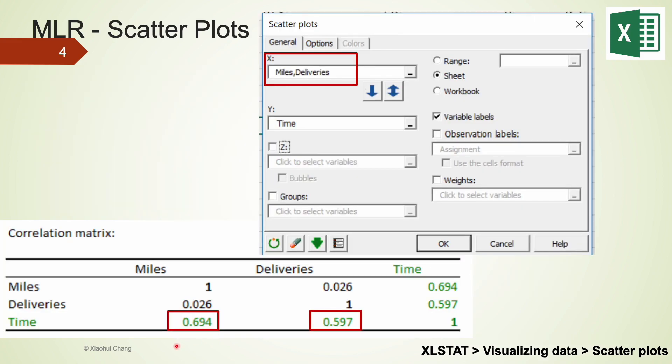We can also examine whether the relationship is linear by using software. For example, in XLSTAT, we can click on Visualizing Data tab, followed by Scatter plots tab. This time, I selected miles and deliveries as our x, and time as our y. As shown on the bottom, the correlation between miles and time is 0.694, and the correlation between deliveries and time is 0.597. These two numbers indicate that linear relationships are positive and moderate. After verifying the linear relationship is indeed appropriate for each x and y, we can proceed to use software to carry out the linear regression model.